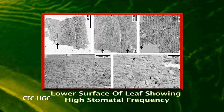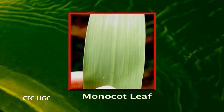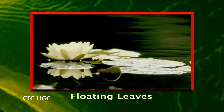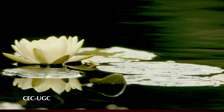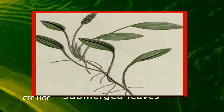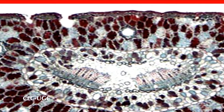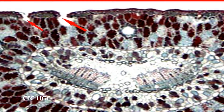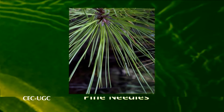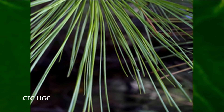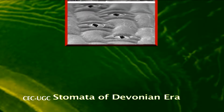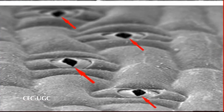Dicotyledons usually have more stomata on the lower epidermis than the upper epidermis. Monocotyledons usually have the same number of stomata on both epidermis. In plants with floating leaves, stomata may be found only on the upper epidermis. Submerged leaves may lack stomata entirely. In oleander or pine, the stomata occur in a substomatal crypt. Such sunken stomata are apparently an adaptation to reduce transpiration. Stomata appeared with the first vascular plants in the lower Devonian.